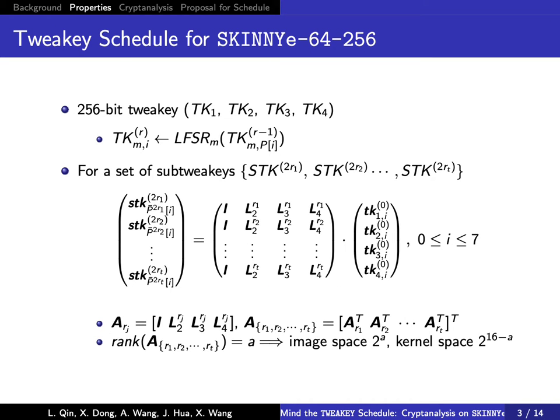We first give a formal analysis of relations of the sub-tweakeys to clarify the properties of the new Tweakey Schedule. In the Tweakey Schedule of SkinnyE 64/256, the cells of the tweakey are updated by a permutation P and different LFSRs. Since the Tweakey Schedule is linear,